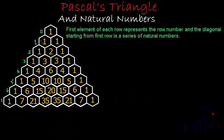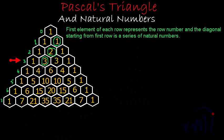If we talk about the first row, this will be the first element, and the first element of row 2 will be this, and the first element of row 3 will be this. If we talk about the first element of each row, that is actually equal to the row number, and that is what I have written over here.